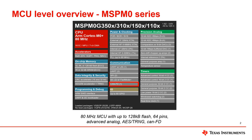First, let's look at the product line. Only the MSPM0 G family supports CAN communication, with one CAN FD module on the 80 megahertz MSPM0 G family.